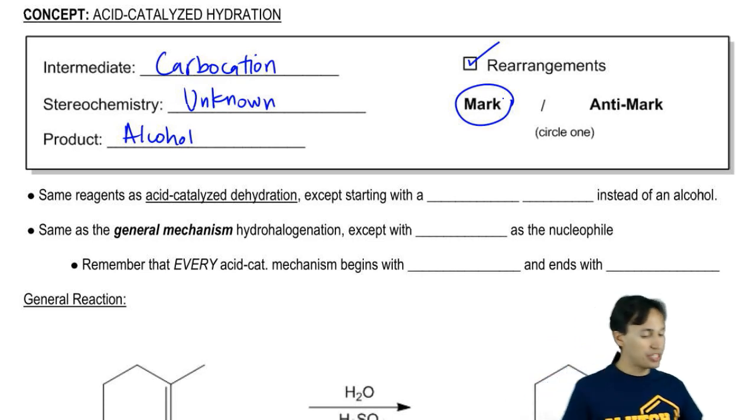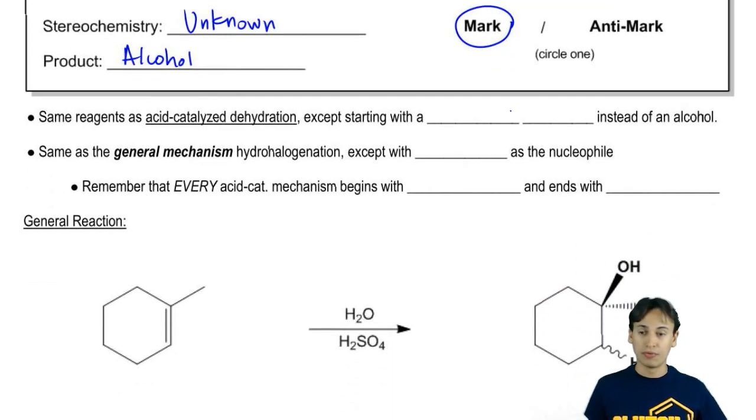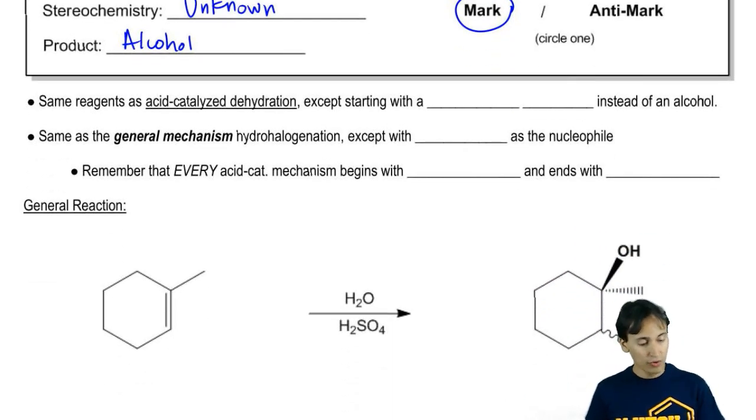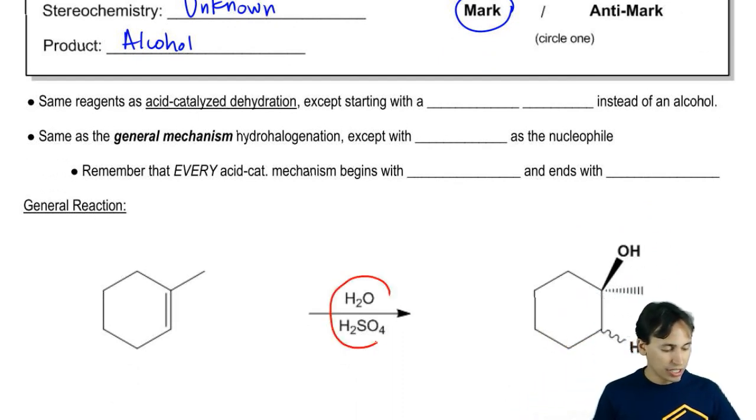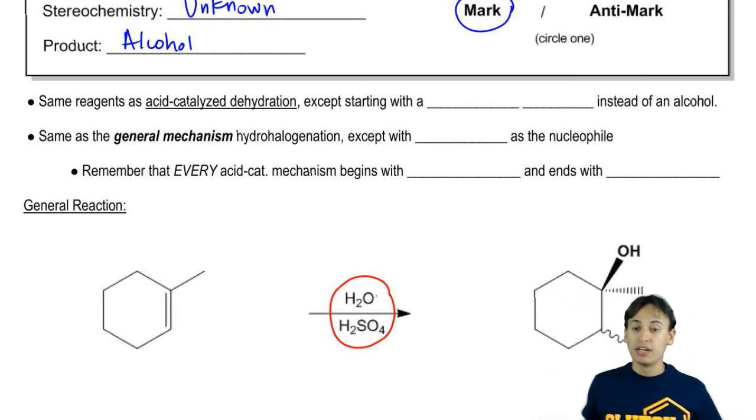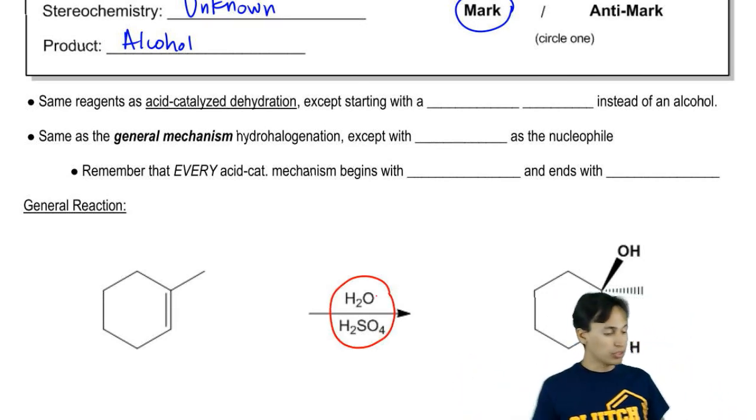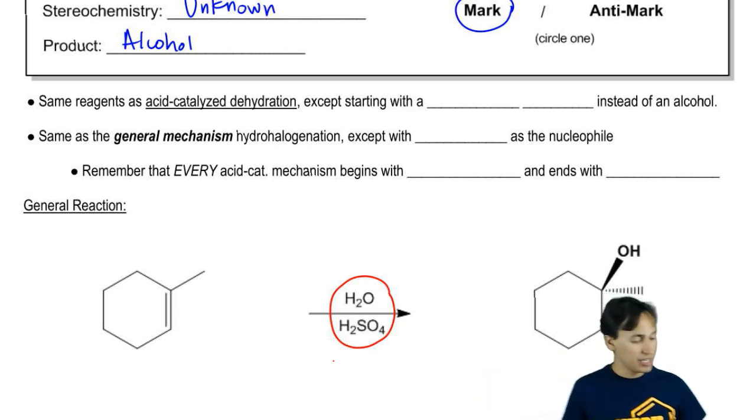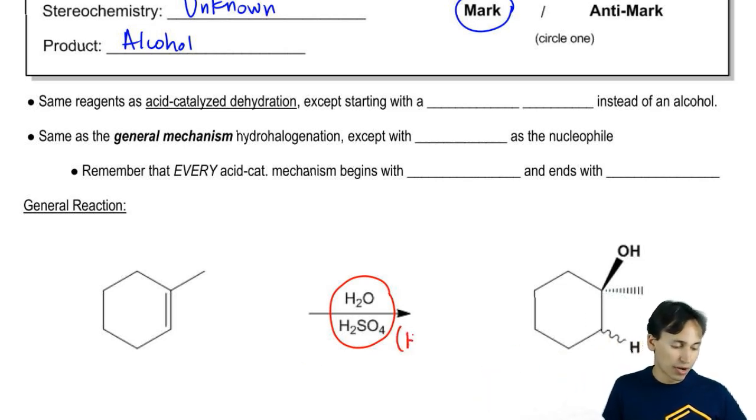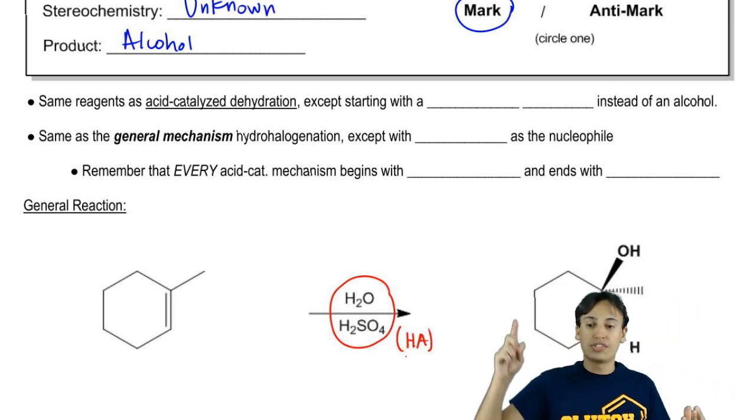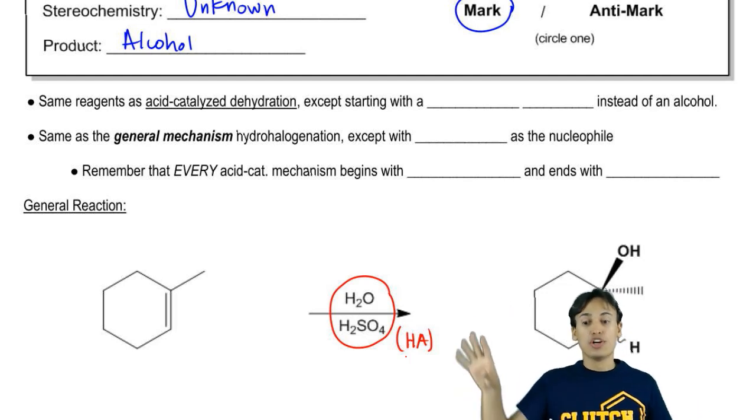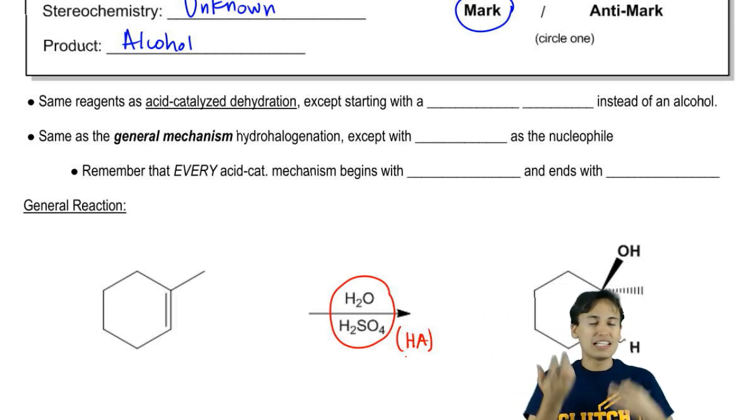Before we go to the general reaction, let's just read off a few bullet points because they will be helpful for us. Notice that our reagents are H2O and H2SO4. Now, put more generally, that's the most likely way to see it, but it's simply going to be H2O with some form of acid or HA. Recall that when I talked about dehydration, I said dehydration was H2O and HA. Actually, the reagents haven't changed at all since dehydration. They're the same.